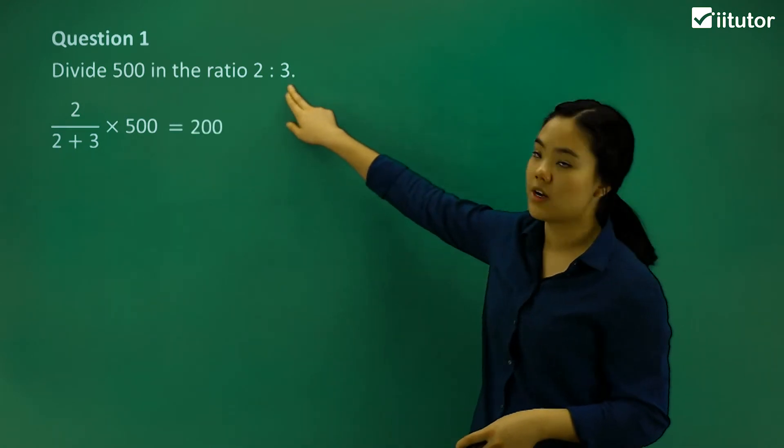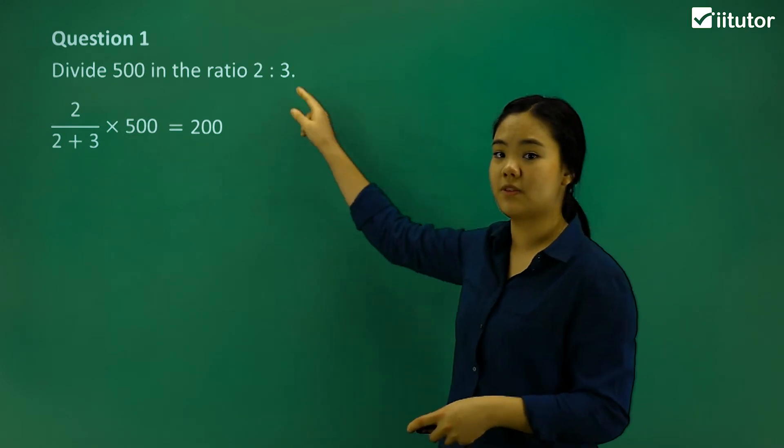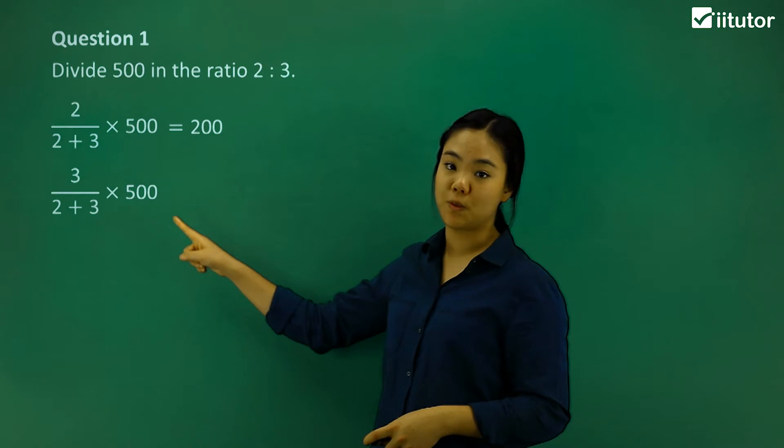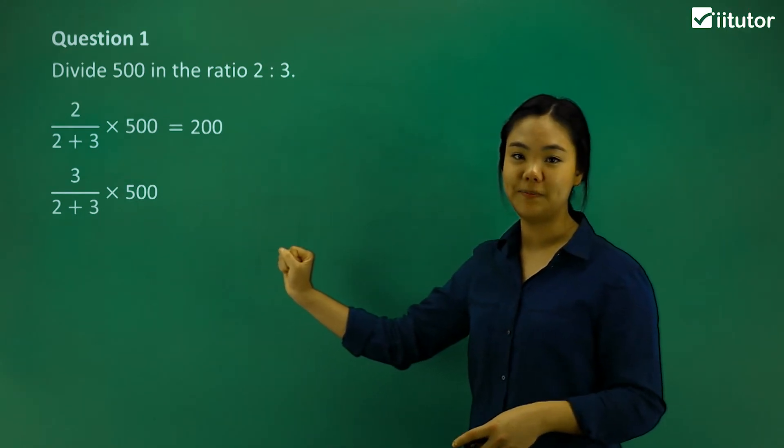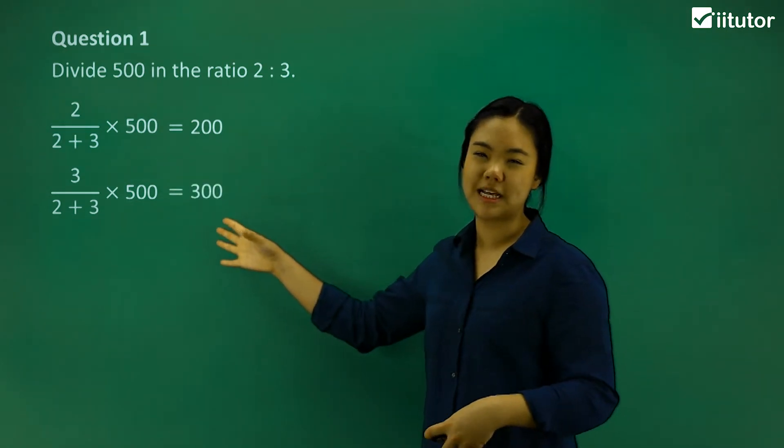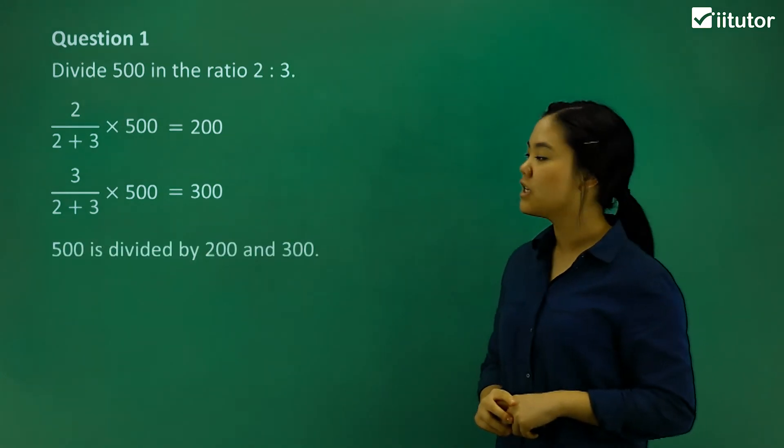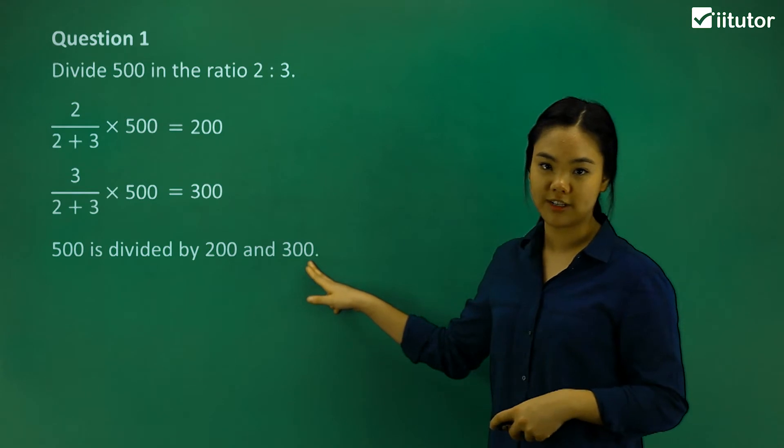So if we want to find it for 3 in this given ratio, we do 3 over 2 plus 3 times 500. So that's 300. Does that make sense? So then 500 is divided by 200 and 300.